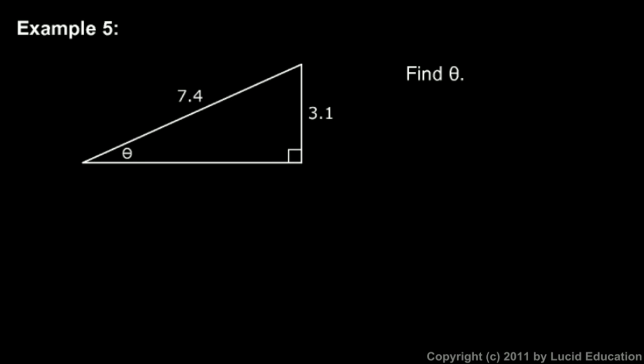In example five here, we're just given a diagram and we're told to find theta. Here's angle theta, and this is a right triangle as you see there. Notice what we see here: this side right here is the side opposite angle theta, and this side right here is the hypotenuse. So we have the opposite and the hypotenuse.